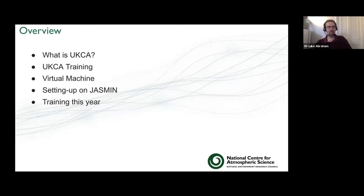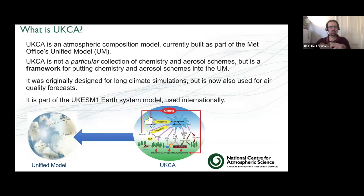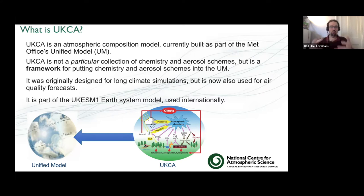I'll talk a little bit about what UKCA is and what the training we do with UKCA is. I'll talk about the virtual machine, setting it up on Jasmine, and then how the training went this year. UKCA is an atmospheric composition model currently built as part of the Met Office's Unified Model. It's not a particular chemistry and aerosol scheme, but a framework for putting different chemistry and aerosol schemes into the UM. It was originally designed for long climate simulations and is also used for air quality forecasts — it's part of UKSM1, used for ozone assessment simulations — and the whole point of the training is to expand on the chemistry schemes.